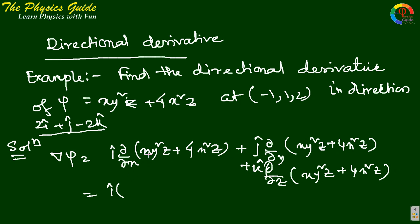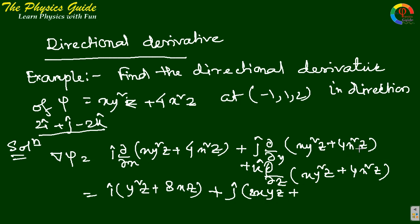For the i-component: y²z is treated with x as variable giving y²z, and 4x²z gives 8xz — so the i-component is y²z plus 8xz. For the j-component: del/del-y gives 2xyz plus 0. For the k-component: del/del-z gives x·y² plus 4x². So grad psi equals i(y²z + 8xz) + j(2xyz) + k(x·y² + 4x²).